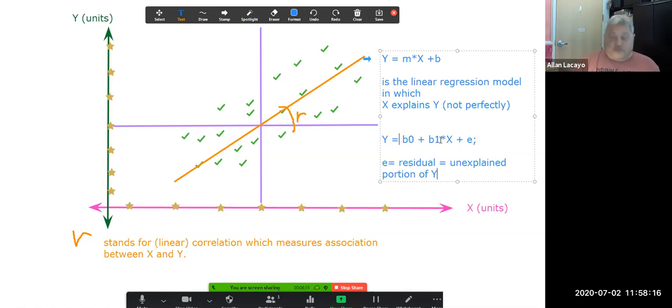So there will be a portion that is explained by X and then there's a portion that is unexplained by X. So Y's explanation is imperfect, and this is why statistics become an important part of the understanding of relationships that can still be construed as linear but not perfectly so.